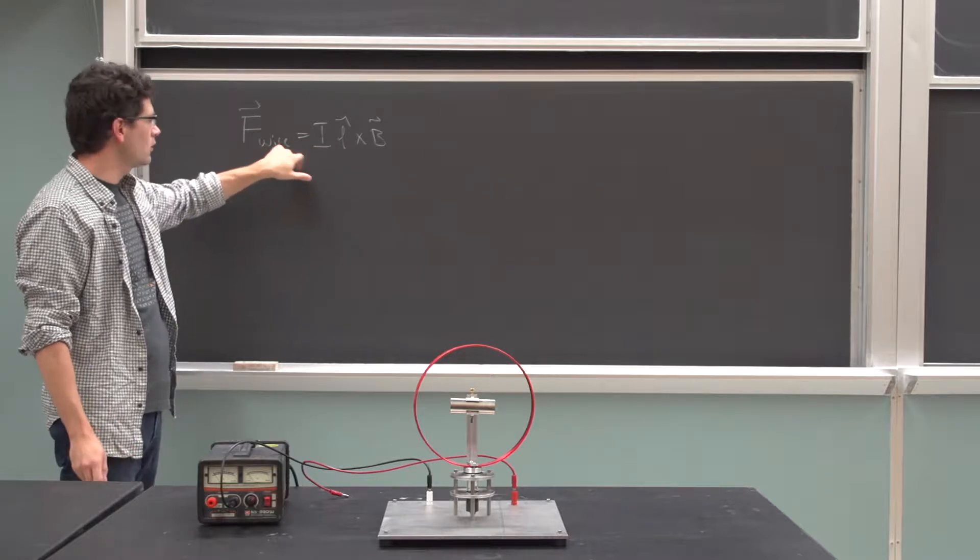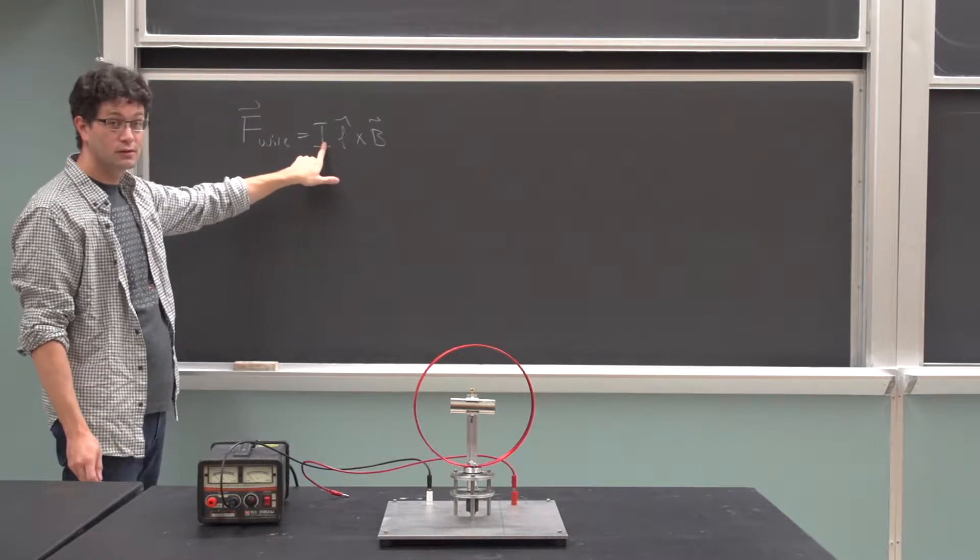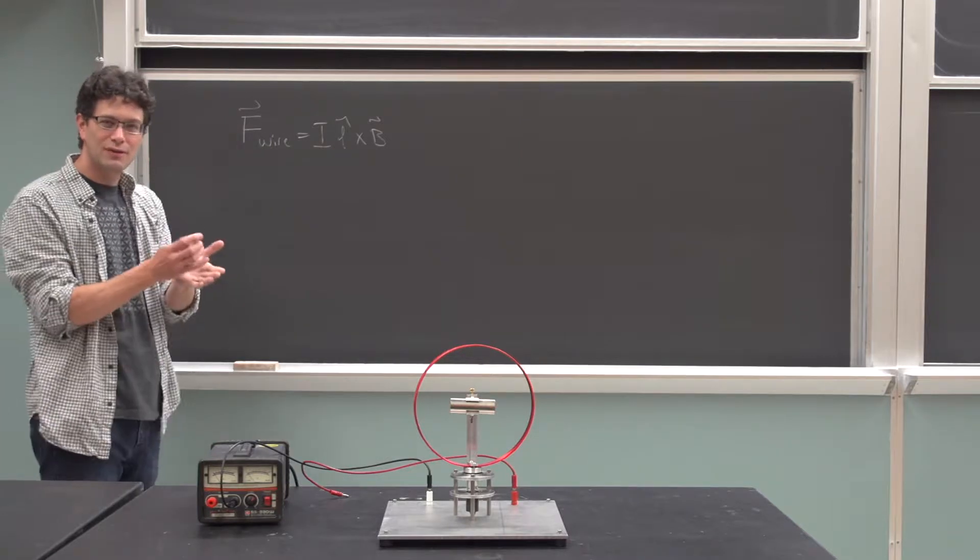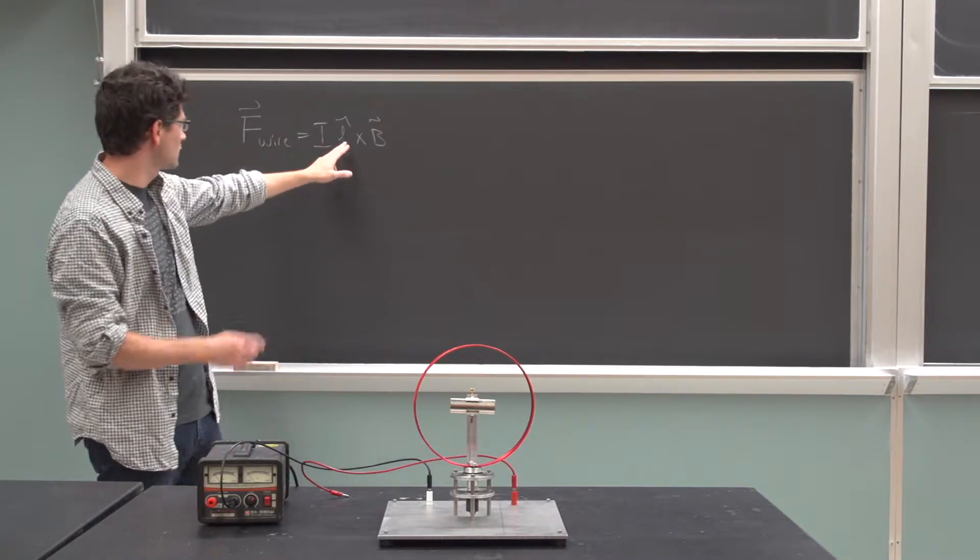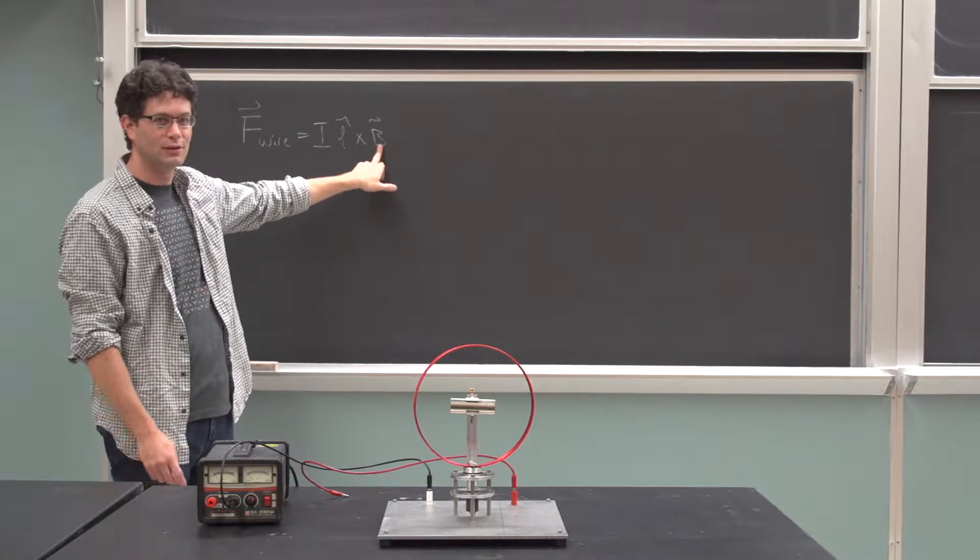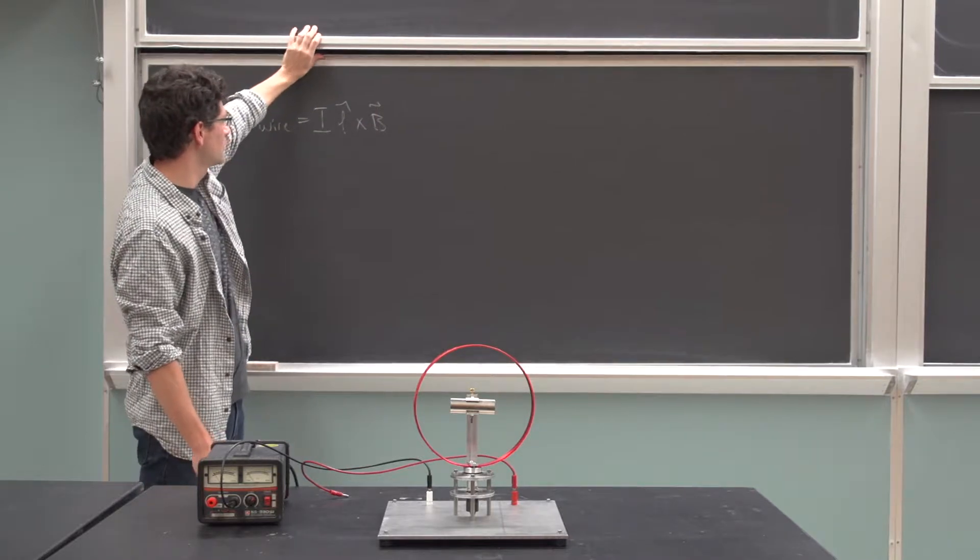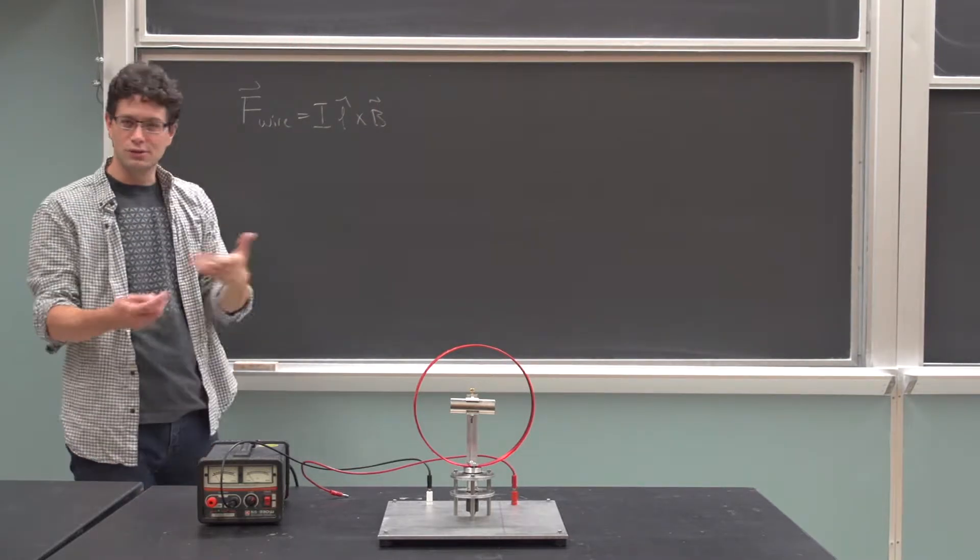then there will be a force on that wire, which is proportional to the current in the wire. L is a unit vector in the direction of the wire, in the direction of the current, and B is the magnetic field. So this is a cross product, so to find the direction of the force, we need to use a right-hand rule.